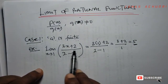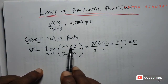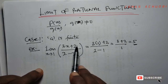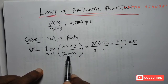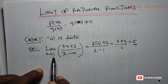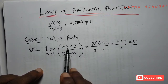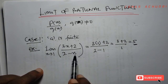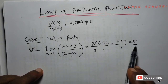So for this rational function — rational in the sense that it is a fraction where the numerator and denominator are both polynomials — as x goes very close to 1, the function (3x + 2)/(2 − x) goes very close to 5.